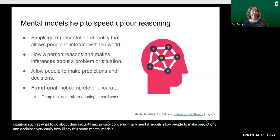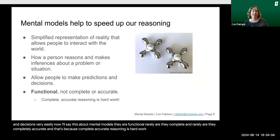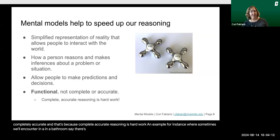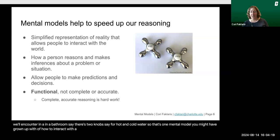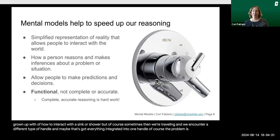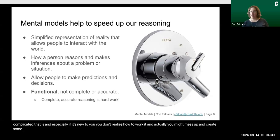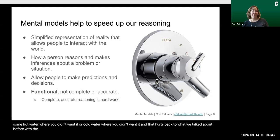Mental models are functional, but rarely are they complete or completely accurate — because complete, accurate reasoning is hard work. For example, in a bathroom you might encounter two knobs for hot and cold water. That's one mental model you might have grown up with for how to interact with a sink or shower. But when traveling, you might encounter a different type of handle with everything integrated into one. If it's new to you, you don't realize how to work it, and you might end up with hot water where you didn't want it or cold water where you didn't want it.